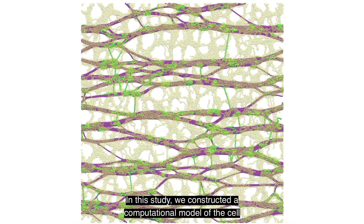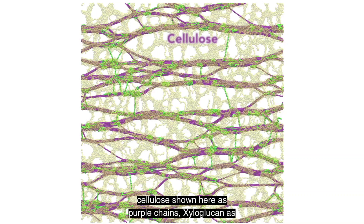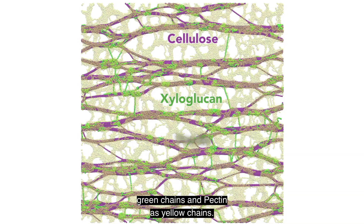In this study, we constructed a computational model of the cell wall comprised of three dominant wall polymers: cellulose, shown here as purple chains; xyloglucan as green chains; and pectin as yellow chains.